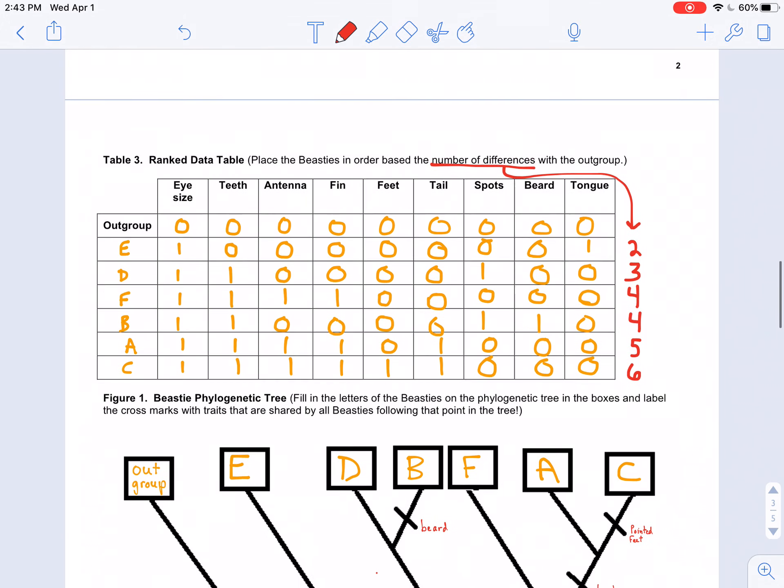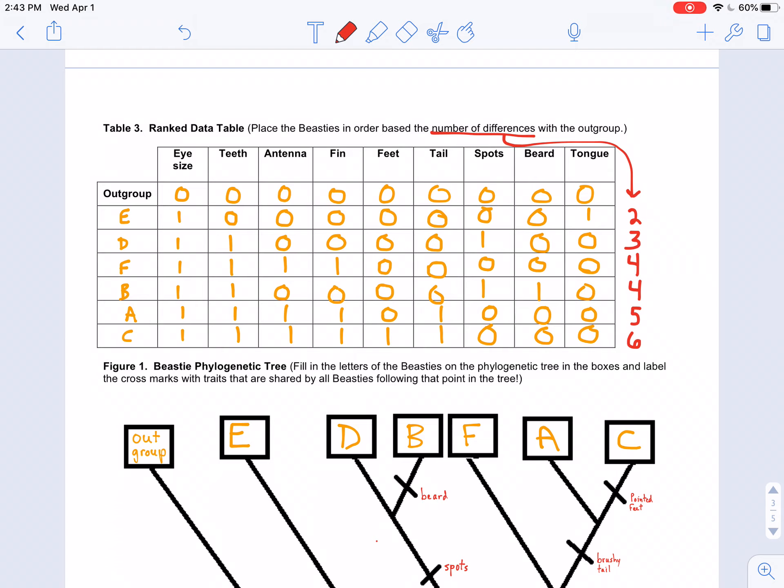And then I took that information and I rearranged the rows to sort of rank them based on the differences they have between the outgroups. And I went ahead and totaled those differences off to the right. Now, one thing that you might see here is that we have two different organisms that are sort of tied with the differences we see between them and the outgroup. And that would be letter F and letter B.